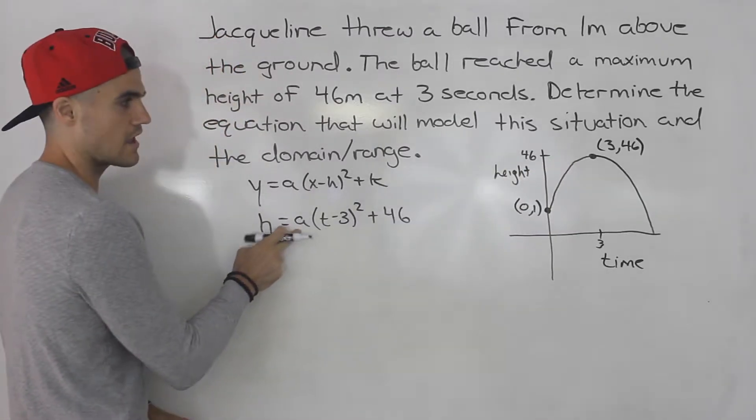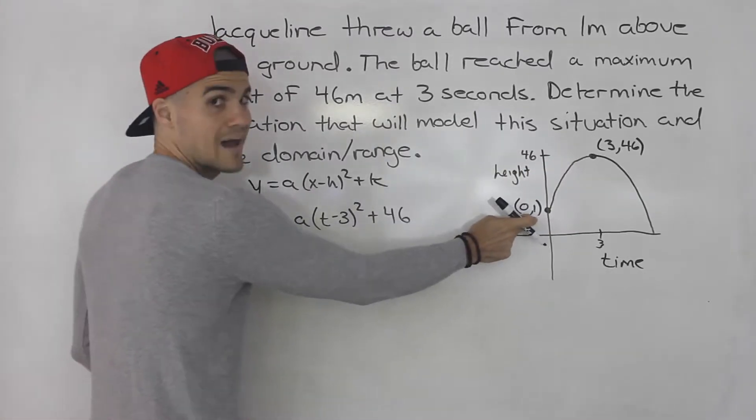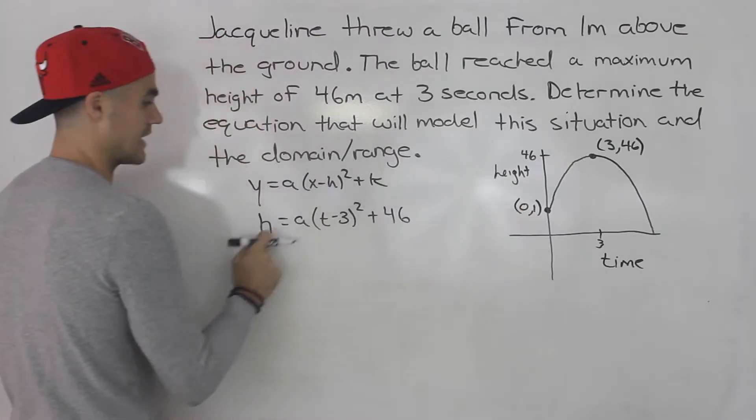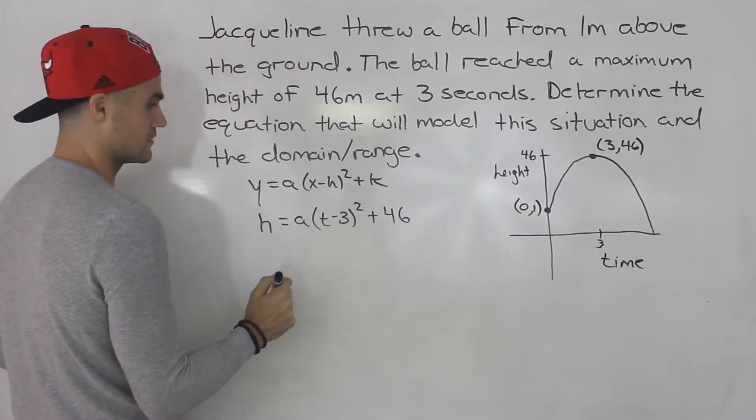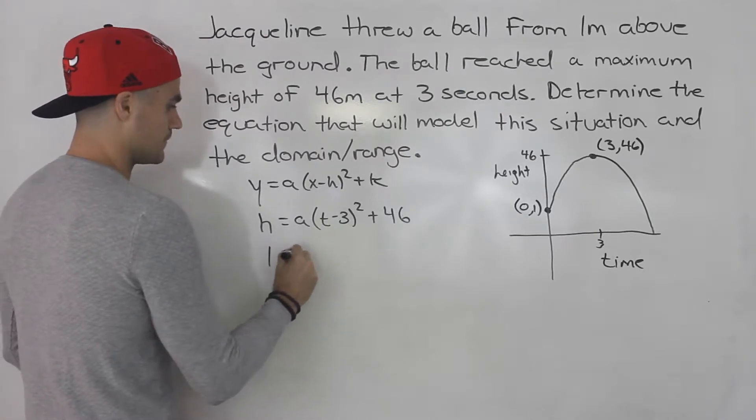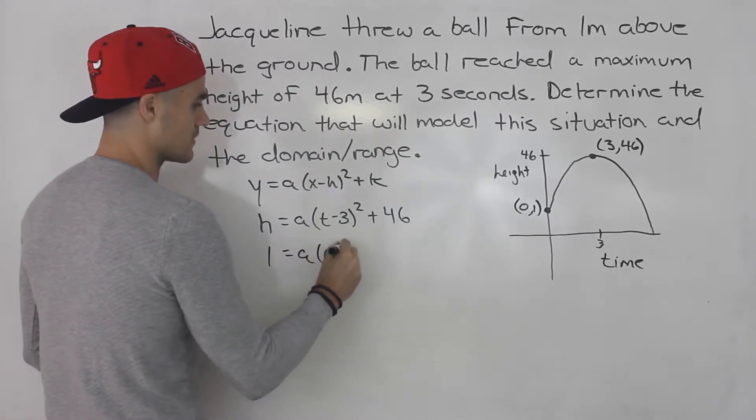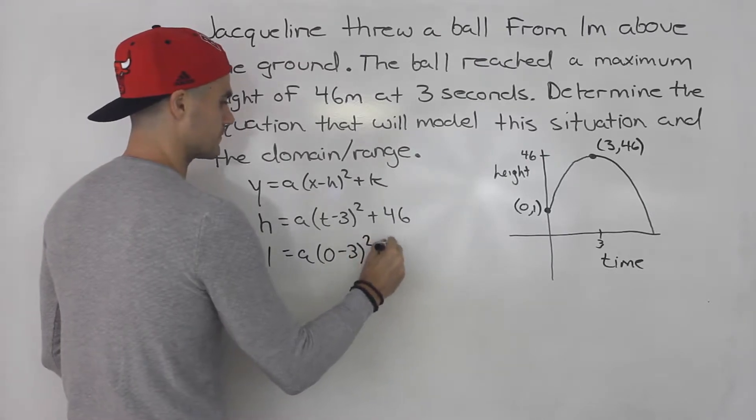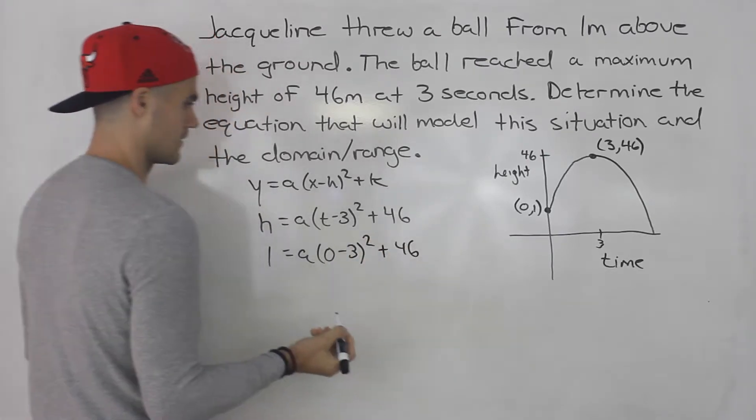We could plug in that point for t and h and solve for the a value. So the h value is 1 when the t value is 0.